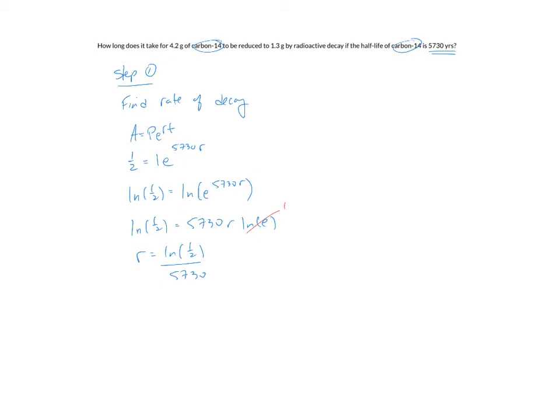So this is the exact value of R. I would recommend for a problem like this to punch this in your calculator and you can store the number in your calculator and recall it a little bit later when we actually need it for this problem. So we have negative 0.000120968. So that's step one of the problem.